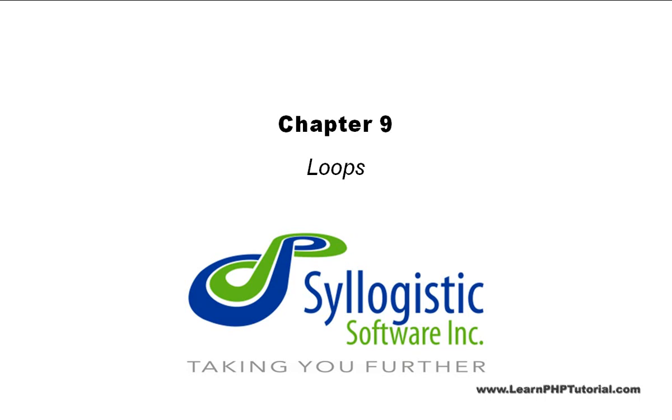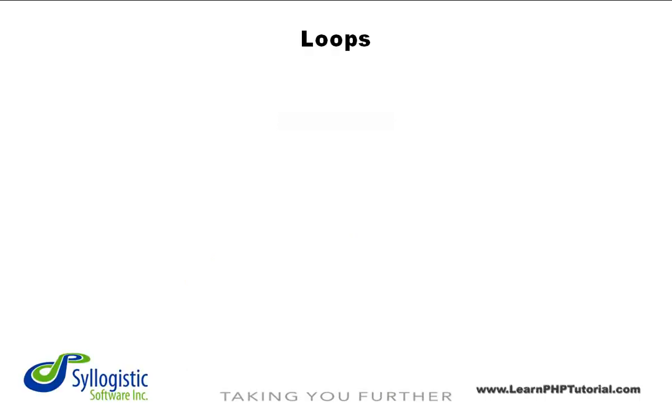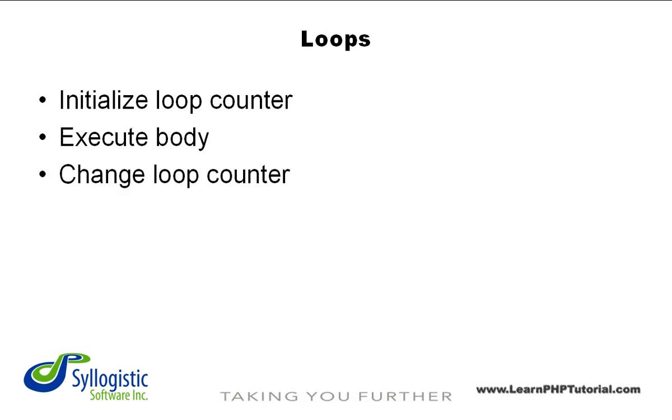Chapter 9 Loops. In programming terms, a typical loop has the following things: a loop counter initialization, a body, a modification to the loop counter, and a condition to determine when to stop.